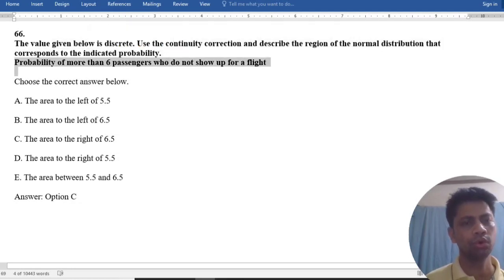Probability of more than 6 passengers who do not show up for a flight. Our answer is option C. Here is option C. Look, how is it option C?